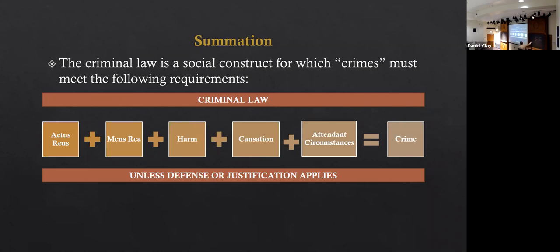On the scale of proof, the prosecutor has to prove everything at about 95%. If you raise an excuse or justification, you only have to prove it by 50.01% — more likely than not, by a preponderance of the evidence. That's our equation for crime. Let's now jump into some specific crimes, what they look like, how they're controlled, and what the elements are.